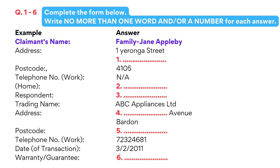I've never done that before. Can you help me? Yes, of course. The first part is for your — the claimant's — details. Where do you live? At 1 Yeronga Street, Durham. How do you spell Durham? D-U-R-H-A-M. Of course, I should know that, but it's just one of those names that sounds quite different from the way you spell it. It is confusing. I've seen it spelt with two R's. And what's the postcode for Durham? 4-1-0-5.